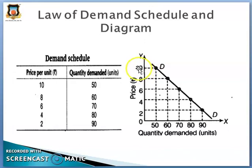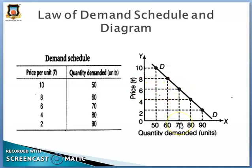When price falls from 10 rupees to 8 rupees, we can see here the quantity demanded increases from 50 units to 60 units. Further, as price decreases from 8 rupees to 6 rupees, demand becomes 70 units, increasing from 60 to 70. As price falls further from 6 to 4 rupees, quantity demanded becomes 80 units, increasing from 70 to 80. So as price falls, quantity demanded increases.